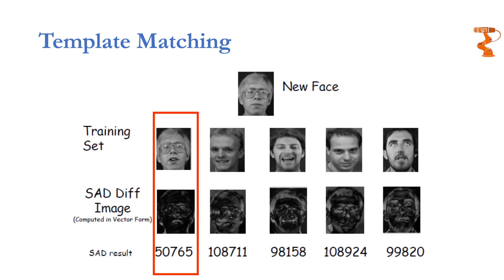One last example of template matching is face recognition. You have a training database with images of different persons' faces. When a new face comes in, you measure the similarity of all faces in the database with this new face using a similarity measure such as squared absolute differences. You calculate that measure for each image — the minimum value indicates the face that maximally matches the new unknown face, and your system identifies the new person as the one with that matching face.